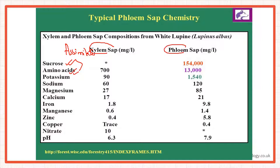In xylem, only water and mineral ions are transported — you will definitely not find sucrose there. In phloem, the major component is sucrose, and then amino acids. These are the two major components in phloem sap, so make sure you mention both when answering. Do not write sucrose only or amino acid only — use both to get full credit.